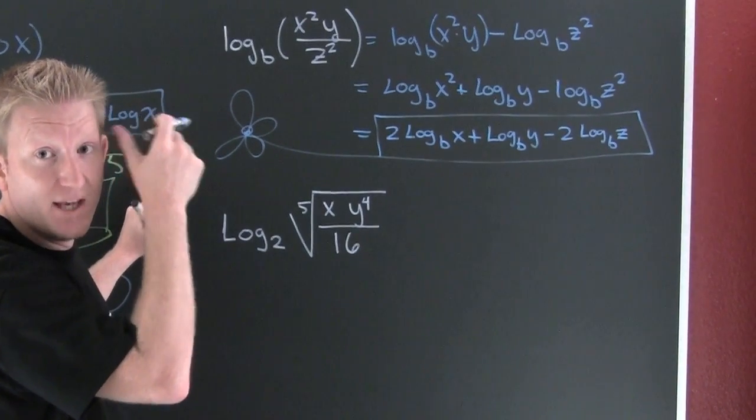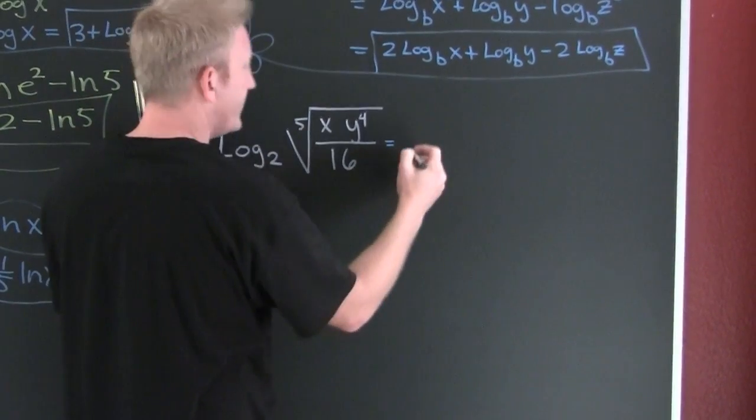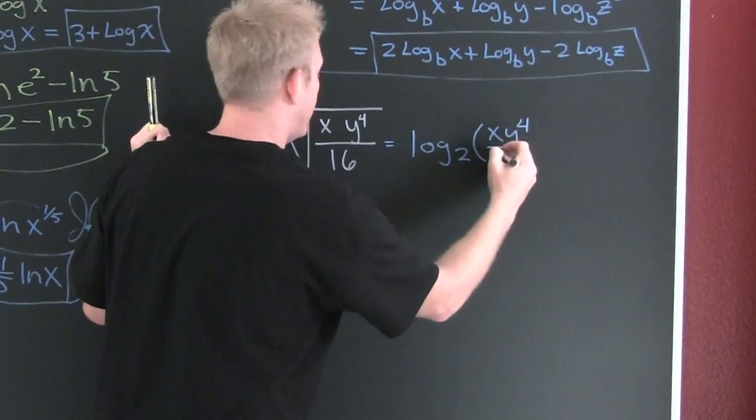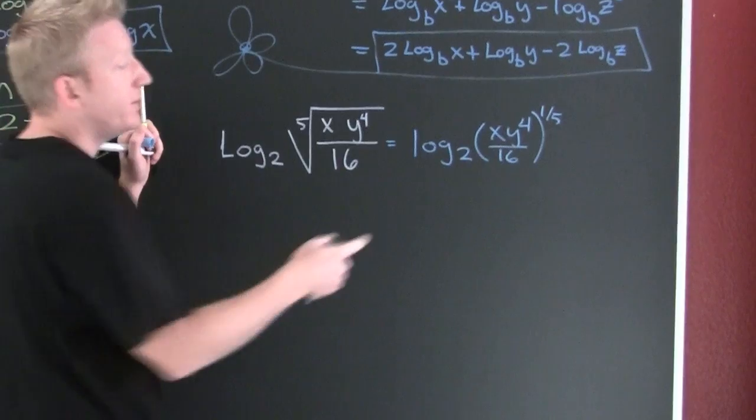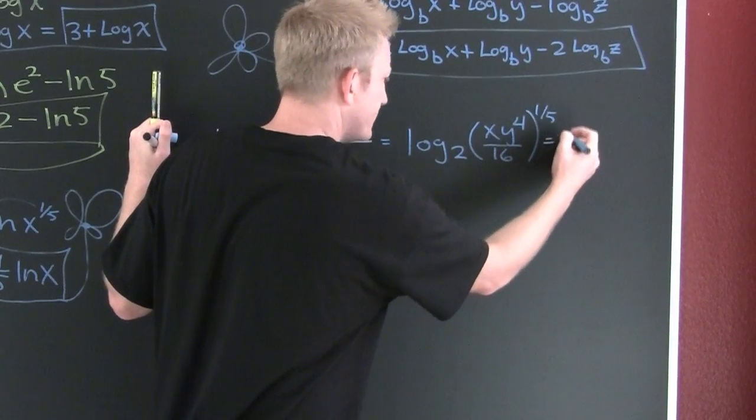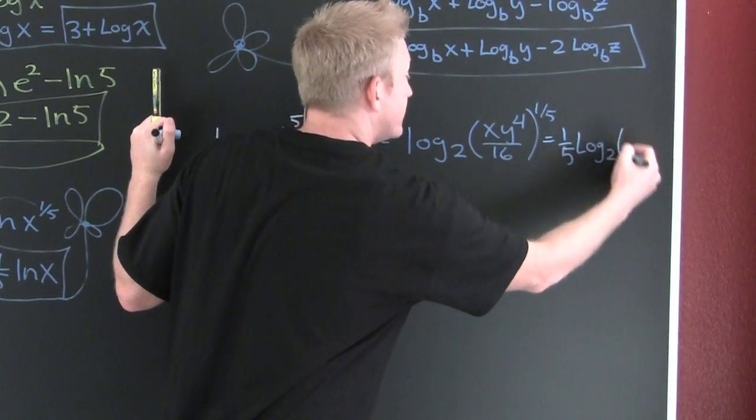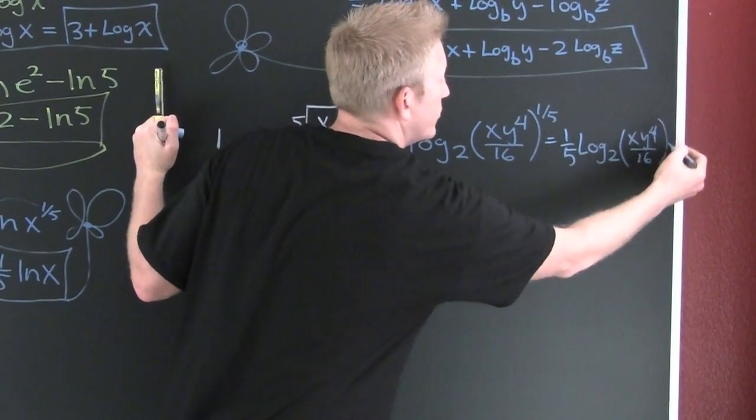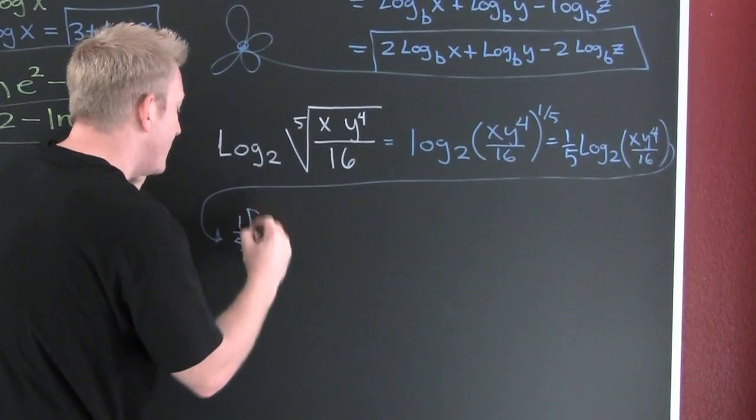Let's take a look at this next one. This next one's big stuff, no whammies. Stop. Rewrite this to the 1 5th power. Log base 2 of x y to the 4th over 16 to the 1 5th. Now what do you want to do? Do you want to bring that down front or put it inside? Either's good, either will work. I'm going to bring it on down front. So then I'm going to have 1 5th of log base 2 of x y to the 4th over 16. I'm bringing it right back over here, taking a look at that.